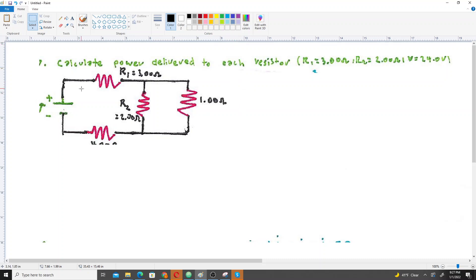Hello everyone, calculate the power delivered to each resistor. The voltage source is 24 volts and that's right here.